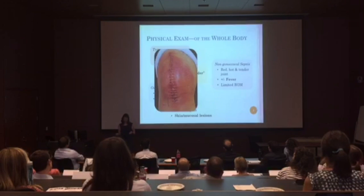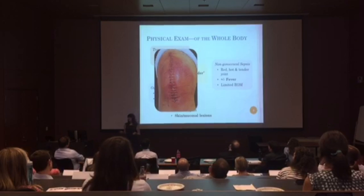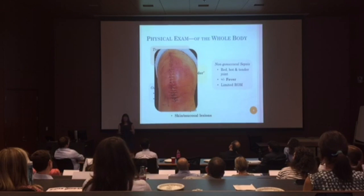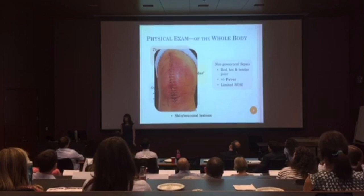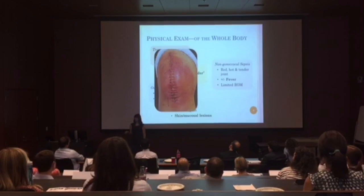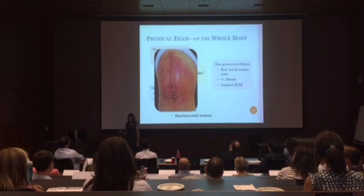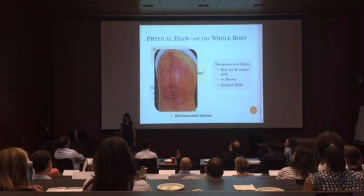For non-gonococcal sepsis, the knee is going to look pretty gross — red, hot, and tender. They may have a systemic manifestation such as a fever, and it's going to be difficult for them to move the knee. Okay, we've got the physical exam down. Now we move on to further diagnostic tests.